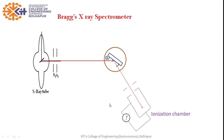The ionization chamber can be rotated around the crystal. If the X-ray beam is at a certain position and the ionization chamber is not aligned with it, we cannot get the correct value of ionization current. So we rotate the ionization chamber and find the position where we get the maximum value of current — this gives the correct value for the intensity of X-rays. This completes the construction of Bragg's spectrometer.